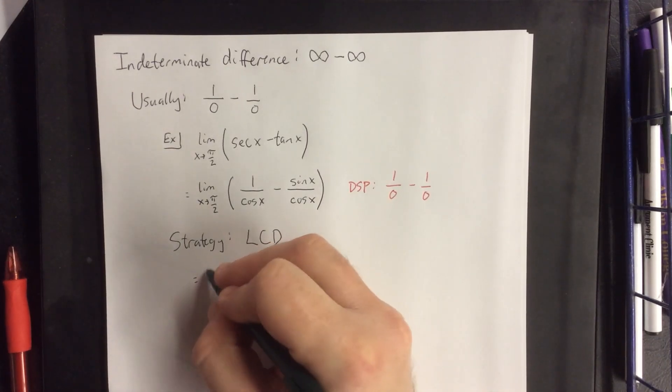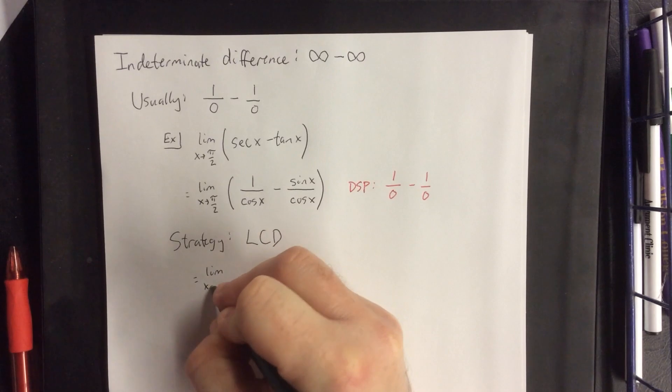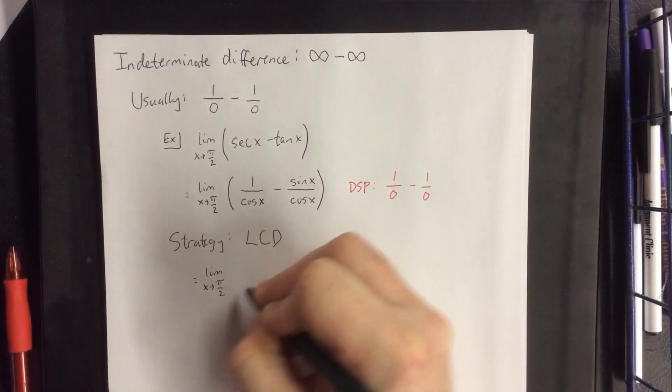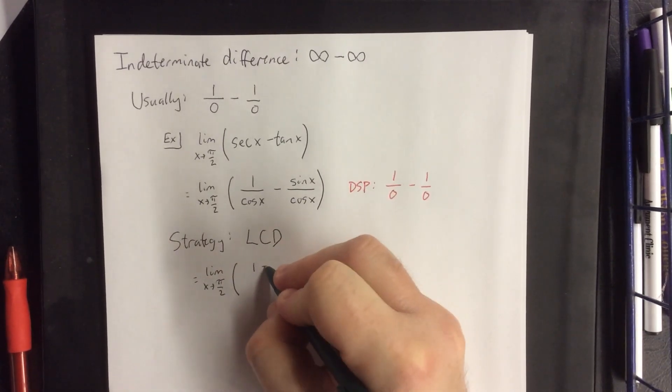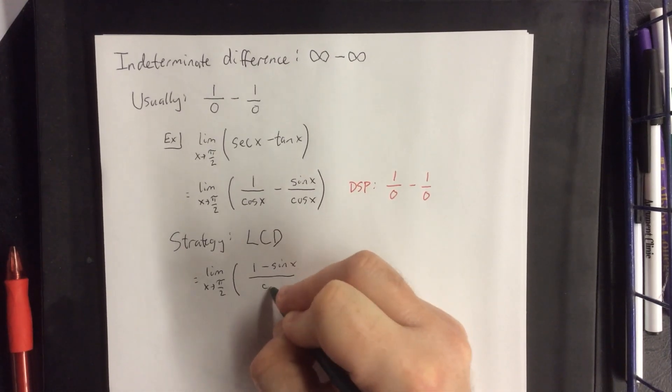For example, in our previous example, they already have a common denominator, and as such, you can just go ahead and combine them into one single fraction to begin with.